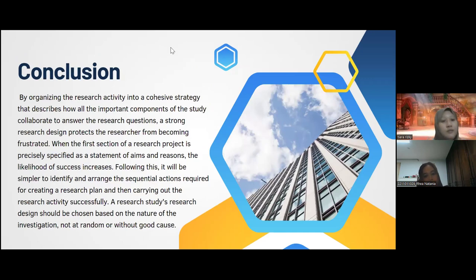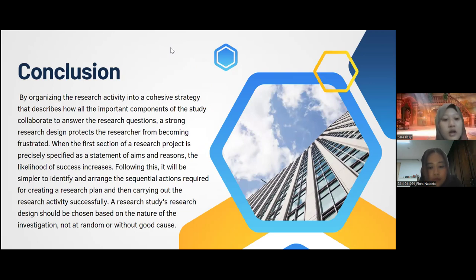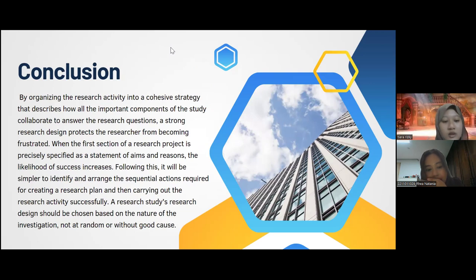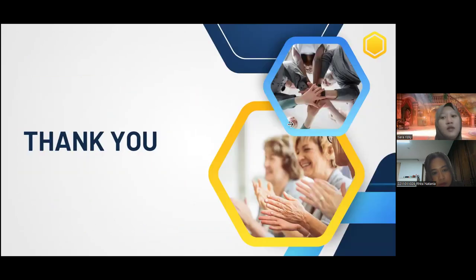In conclusion, by organizing the research activity into a cohesive strategy that describes how all the important components of the study collaborate to answer the research question, a strong research design protects the researcher from frustration. When the first section of a research project is precisely specified as a statement of aims and rationale, the likelihood of success increases, making it simpler to identify and arrange the sequential actions required for carrying out research activities successfully. A research design should be chosen based on the nature of the investigation, not randomly or without good cause. Thank you.